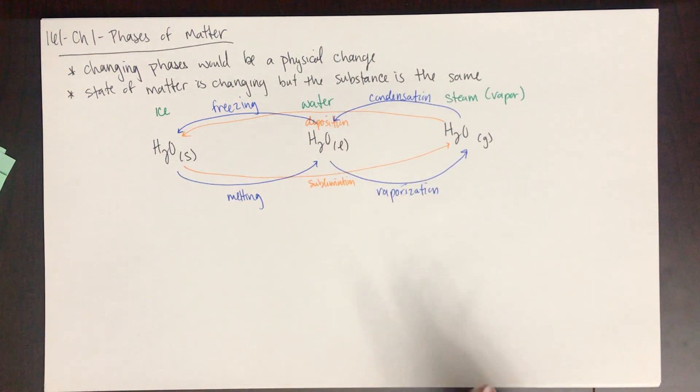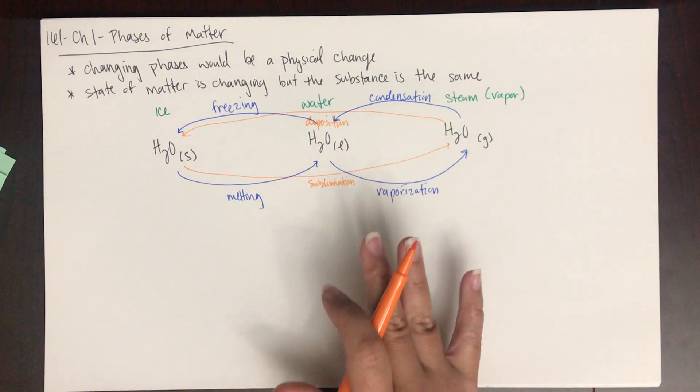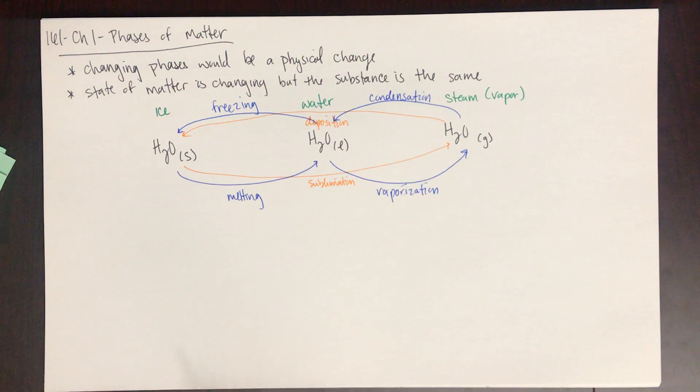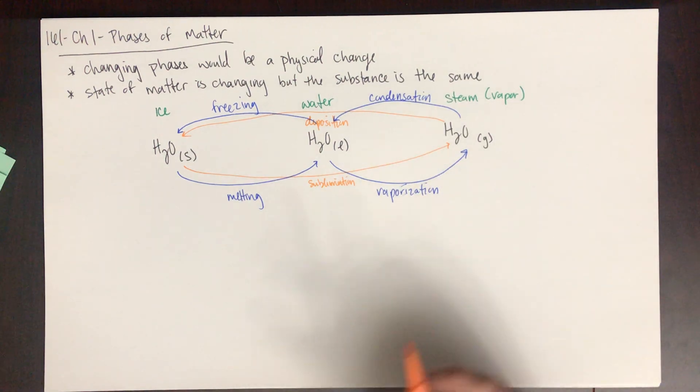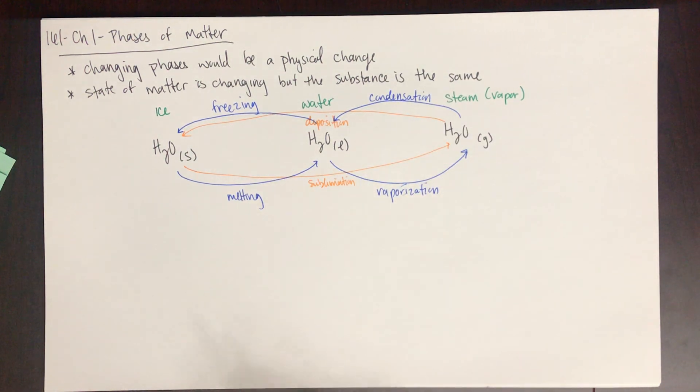These phase changes are all physical changes because the chemistry isn't changing. No chemical bonds are being broken or formed, just the phase of matter is changing. That's changing because of a temperature change or pressure change.